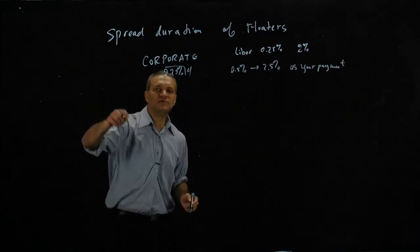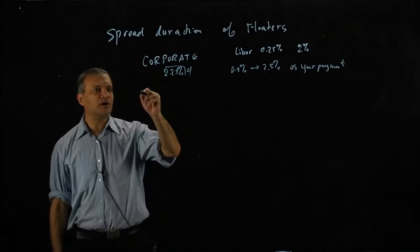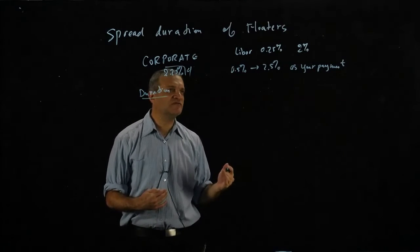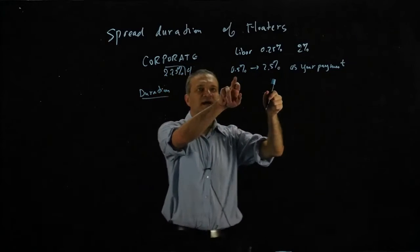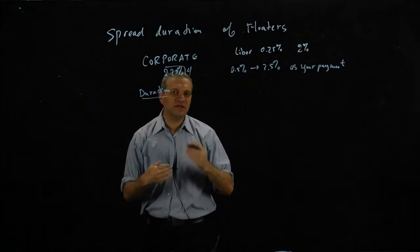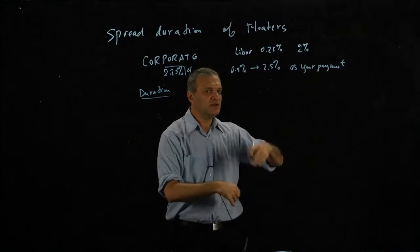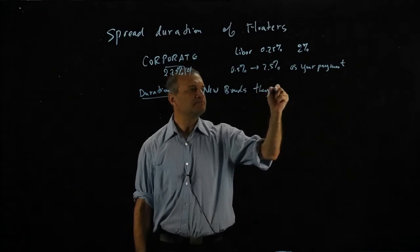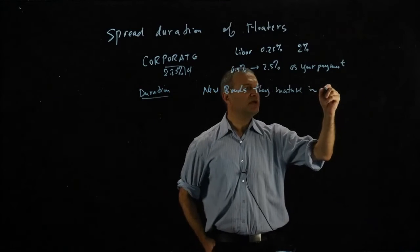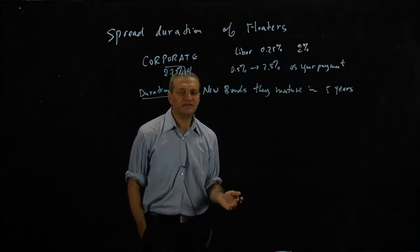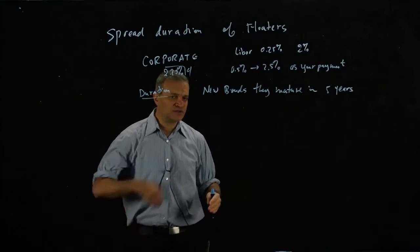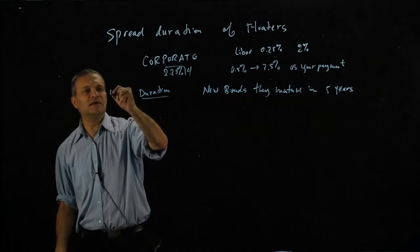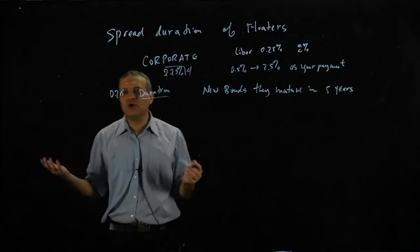Now the question is, how do we think about the spread duration of these floaters? For the regular duration, it's actually very easy, because every three months you have an adjustment of your coupon to the LIBOR, to the interest rate. So you can think about this as being a sequence of bonds issued every three months with a new coupon. Their duration is going to be around 0.25 years, or three months.